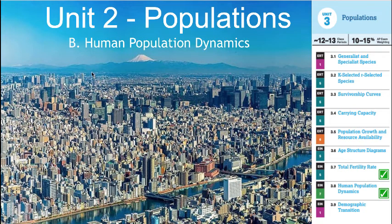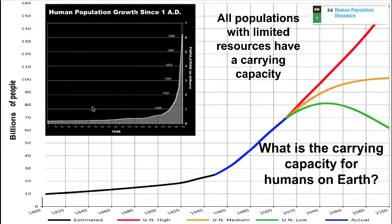Hey class, welcome back to our next set of notes on unit two populations. Today we'll be discussing human population dynamics, focusing on total fertility rate and the different metrics we use to measure human population growth. To begin with, we'll focus on this big question: what is the carrying capacity for humans on Earth? We know all populations with limited resources have a carrying capacity, so what is it?